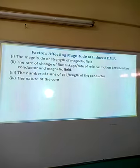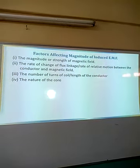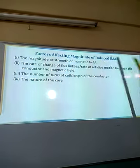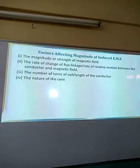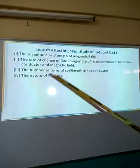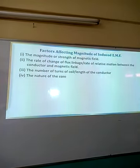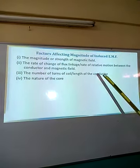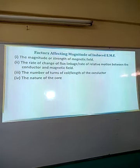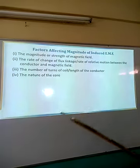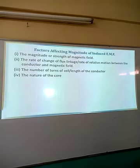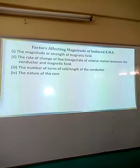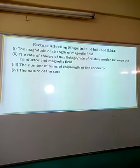We have the factors affecting the magnitude of the induced EMF. The motion of the conductor induces the EMF in the conductor. The first factor is the magnitude or the strength of the magnetic field — when the magnetic field is large, more EMF is induced. The second factor is the rate of change of magnetic flux linkage — the higher the intensity of the magnetic flux, the higher the EMF induced. The third factor is the number of turns of the coil or the length of the conductor. The fourth factor is the nature of the coil.